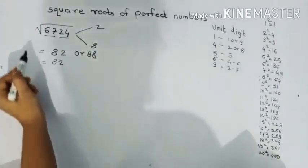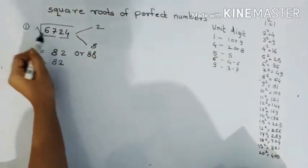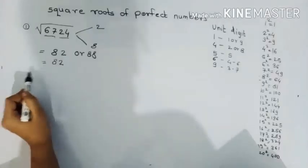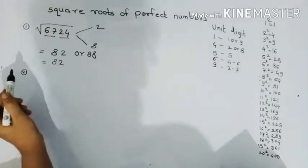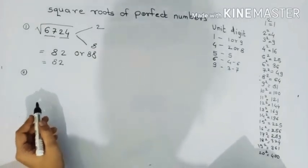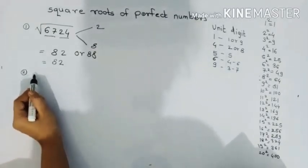You will do it in the calculator, the square root of 6724 will come. If you go to this trick, you can remove the square root in seconds, how big it is.